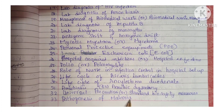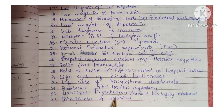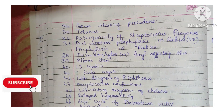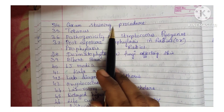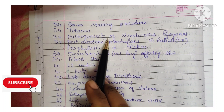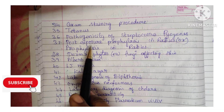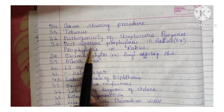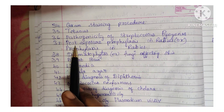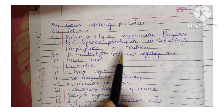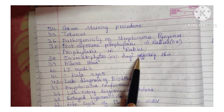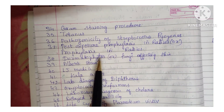Next question: universal precautions or standard biosafety measures — both are the same. Next question: pathogenesis of malaria. Next question: gram staining procedure. Next: tetanus. Next: pathogenicity of Streptococcus pyogenes. Next question: post-exposure prophylaxis in rabies, or prophylaxis in rabies, or prevention of rabies — all are the same. Dermatophytes or fungi affecting skin infection — all are the same.